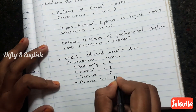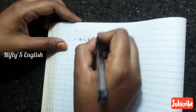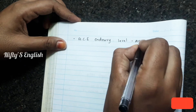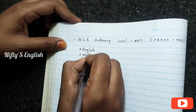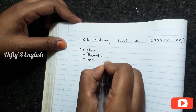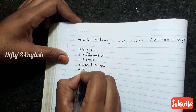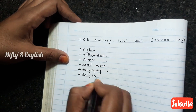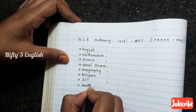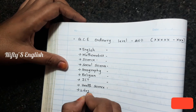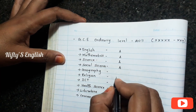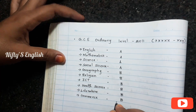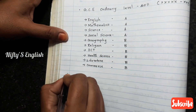After that, I write another educational qualification: GCE Ordinary Level 2011. I put the school name, place, and index number. The subjects are Mathematics, Science, Social Science, Geography, Religion, ICT, Health Science, Literature, and Commerce. I put the results as well.